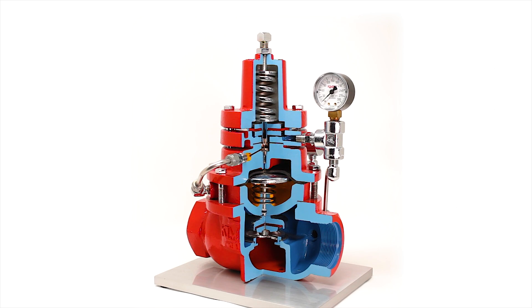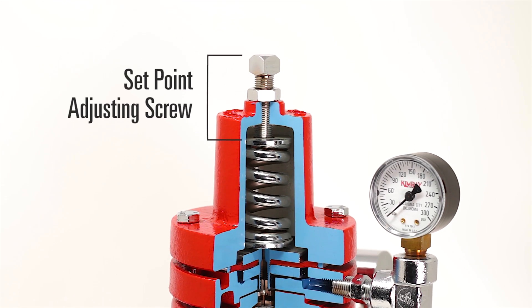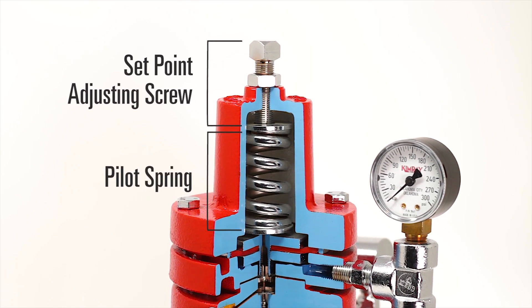This valve controls downstream pressure. To adjust the set point, turn the bolt on top which will compress the spring.